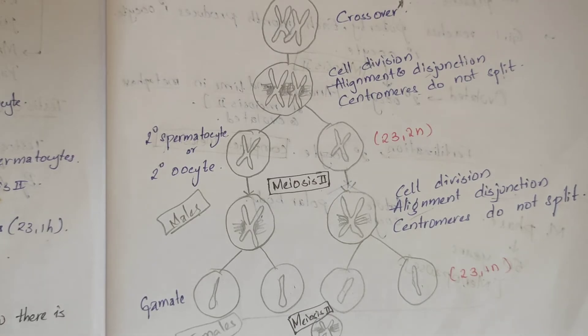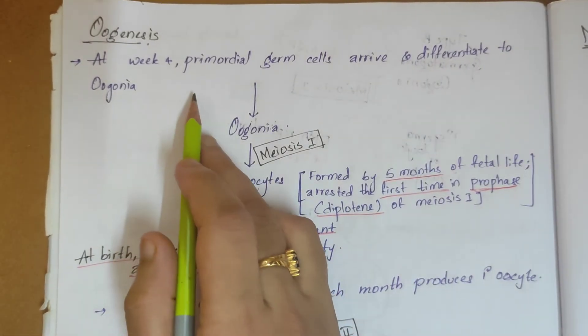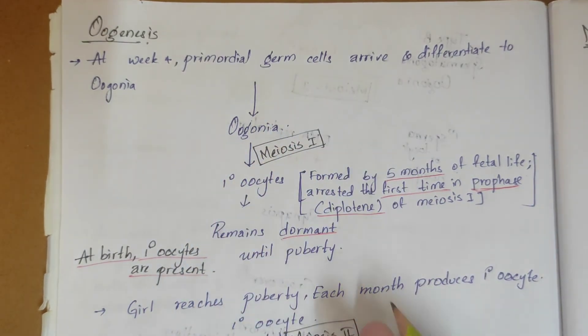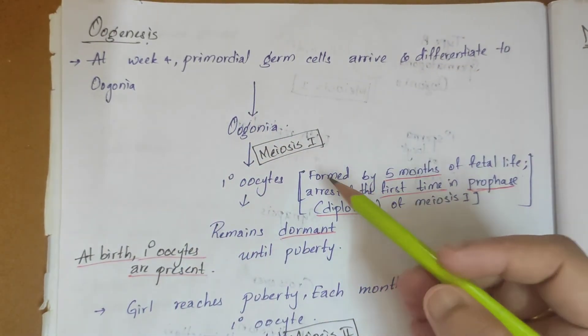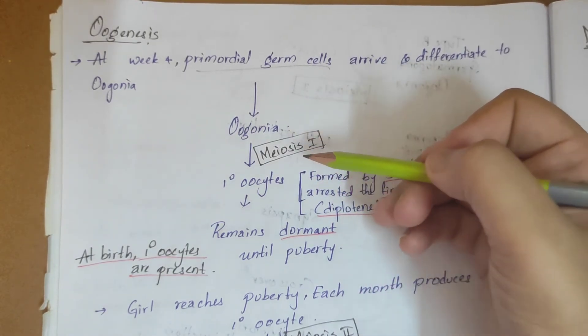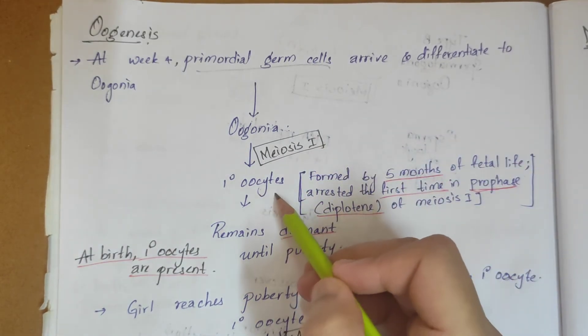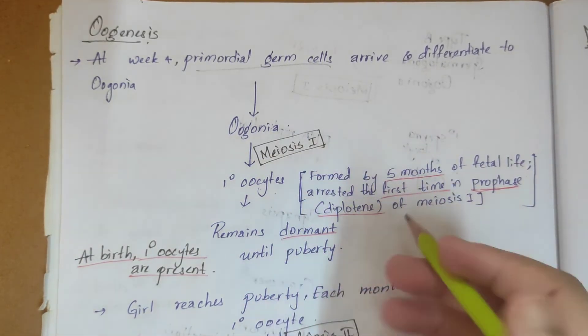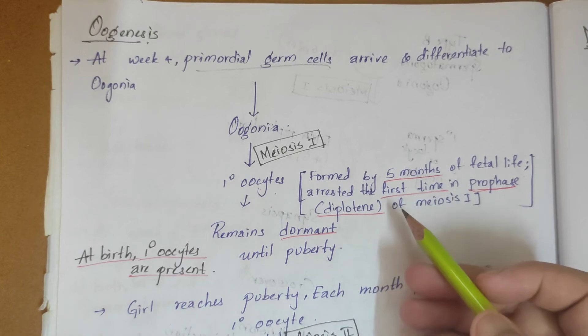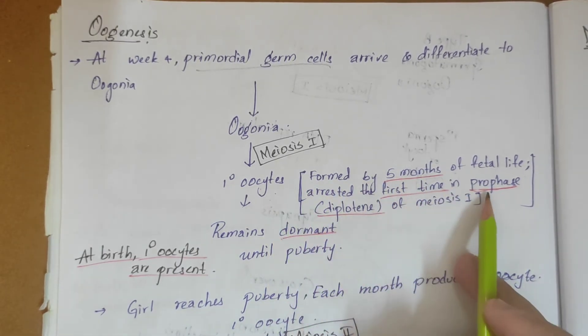Next is oogenesis. In oogenesis, at week 4, primordial germ cells arrive and differentiate into oogonia. Oogonia undergoes the process of meiosis 1, which forms the primary oocyte. These are formed by 5 months of fetal life, and this stops at prophase.